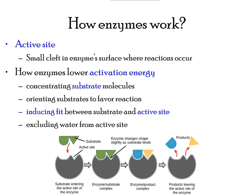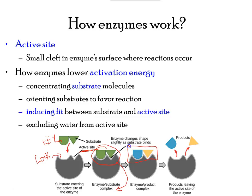Each enzyme has a site called the active site. An analogy is a lock which can only open with the correct key. A substrate that has the same shape as the active site can attach to it and the reaction begins. Once the substrate attaches to the active site, it forms a complex. The newly formed enzyme-substrate complex then rearranges its molecules and eventually products are formed. By the end of this process, the enzyme is released free.